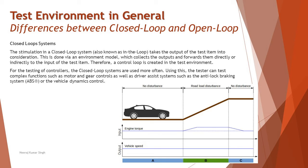In zone B, where there is an inclination, the engine torque is automatically increased. The positive road gradient causes an additional opposing force on the vehicle which would normally cause a slowdown. But the cruise control function reads the current vehicle speed and increases the engine torque to compensate for the road gradient, keeping vehicle speed constant regardless of the disturbance. In zone C, the road gradient goes back to zero, so the opposing forces decrease. To prevent the vehicle from accelerating beyond the set speed, the engine torque is decreased, keeping the output vehicle speed constant.